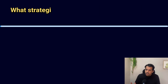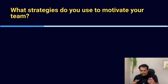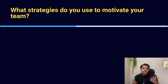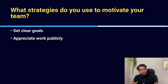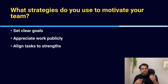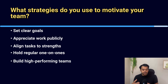Next question: what strategies do you use to motivate your team? This is asked because it's a senior role. You can say: I start by giving clear goals so everyone knows what success looks like. I appreciate good work publicly and give feedback privately. I make sure people get tasks aligned with their strengths, encourage learning, and give space for new ideas. Regular one-on-ones help me understand challenges early. A motivated team performs better and grows faster.